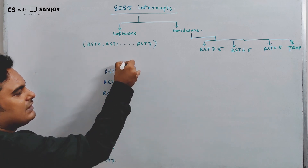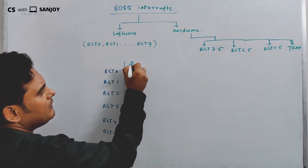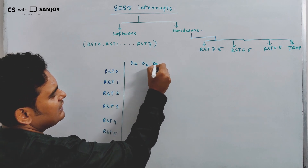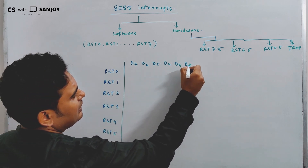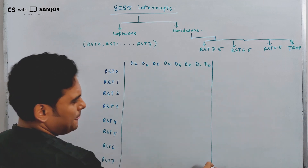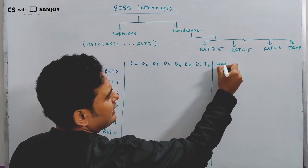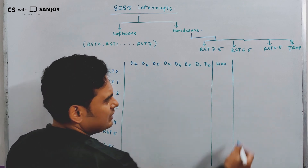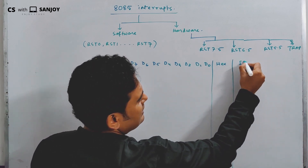These are the interrupts. Now we have 8 bits: D7, D6, D5, D4, D3, D2, D1, and D0. We are going to write the hex code and the ISR location for each interrupt.